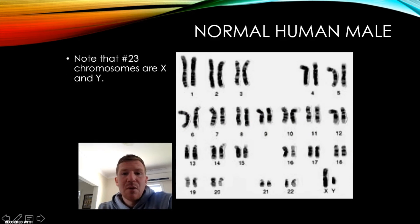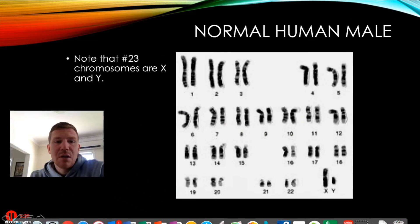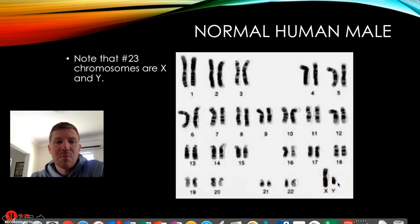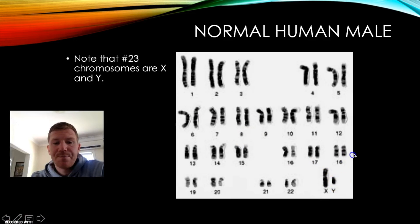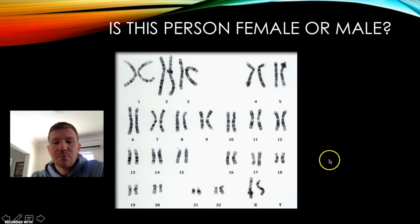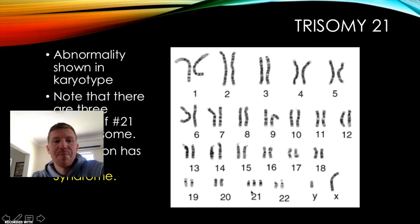In this case, you can see X and Y, so therefore it's a male. In this case, you've got two X's, so it's a female.